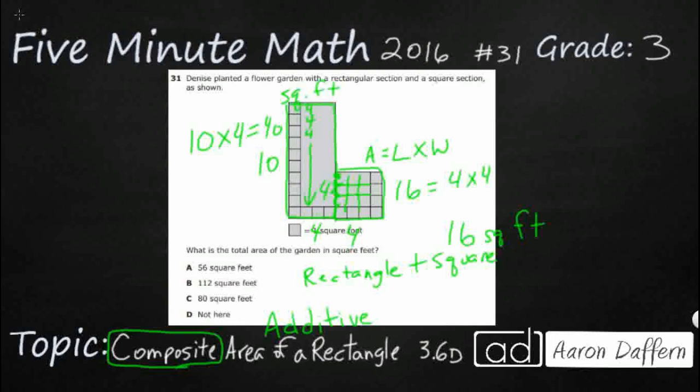You can write it SQFT. You can write it like you have right here. Or another way to write it would be 40—sometimes you'll see it like this when you get a little bit older. Forty feet, and then that little two up there means squared. So we've got two different options here.